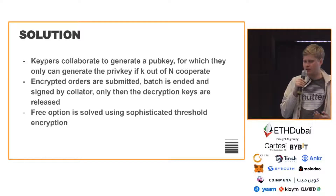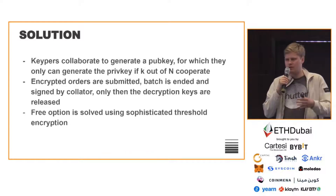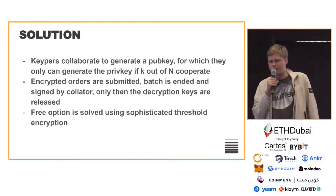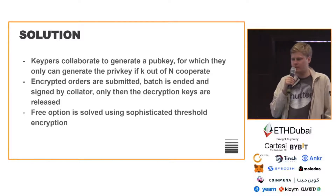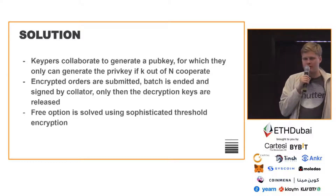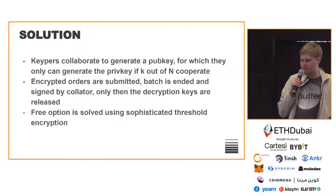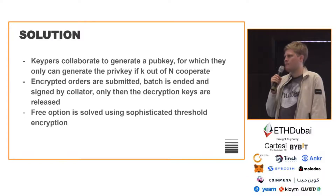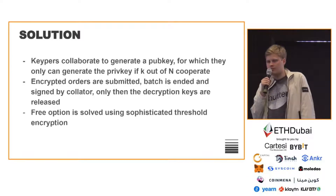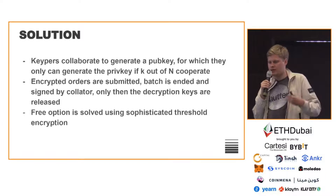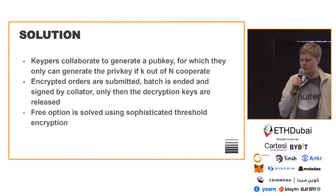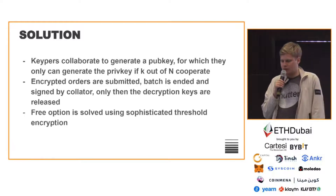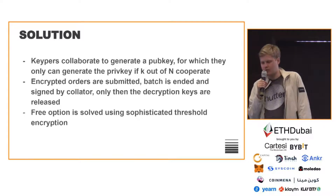That's why we use threshold encryption and keeper systems — think of 50 to 200 crypto node providers that collaborate. The threshold encryption mechanism, via DKG, collaborates to generate the encryption key which users use to encrypt. Then the block producer, or collator, signs the block and finalizes the order of transactions. Afterwards, the keepers collaborate again to release the decryption key. That's where we ensure the transaction is actually executed, solving the free option problem via threshold encryption.